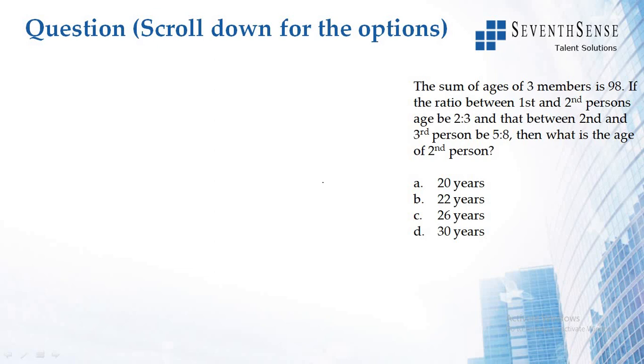The sum of ages of three members is 98. If the ratio between first and second person's age is 2 to 3, and that between second and third person is 5 to 8, then what is the age of the second person?